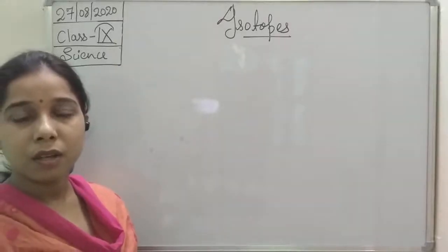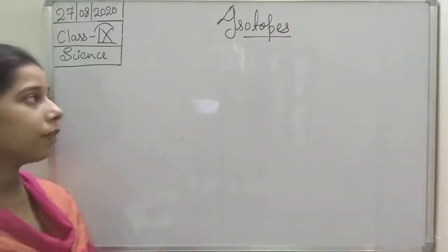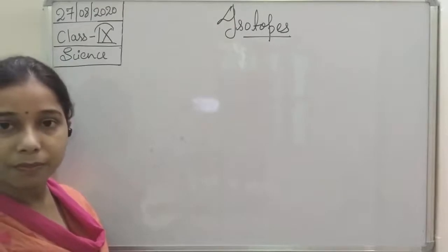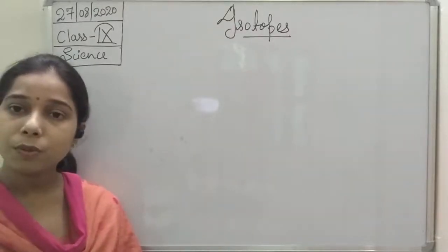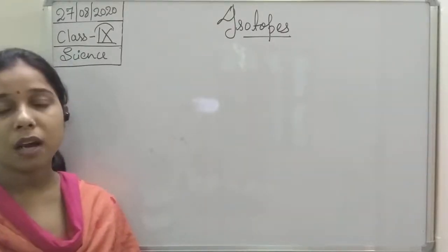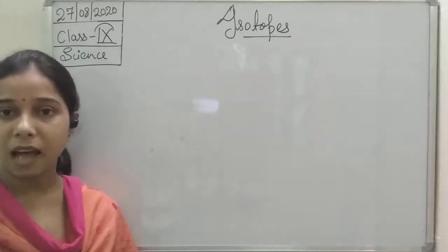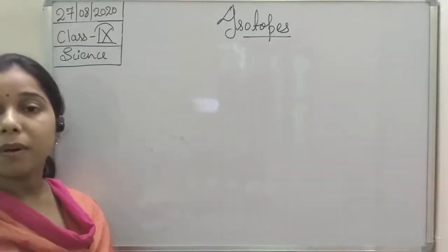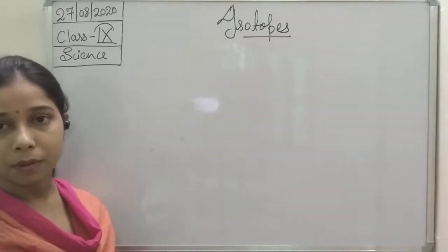Hello students. In the previous class we were talking about isotopes. What are isotopes? Isotopes are those elements which have the same atomic number but different mass number.